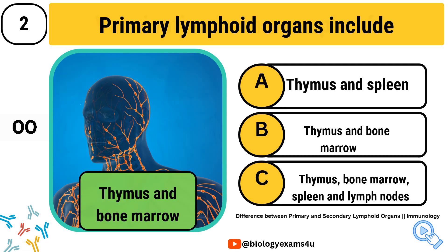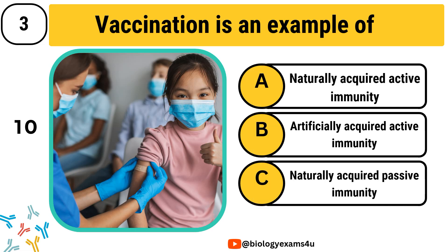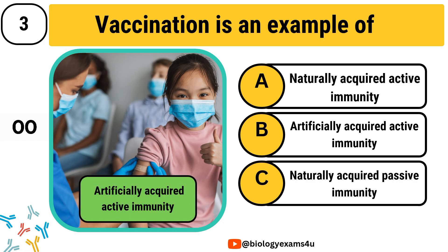Question number 3. Vaccination is an example of: naturally acquired active immunity, artificially acquired active immunity, or naturally acquired passive immunity. The correct answer is artificially acquired active immunity.